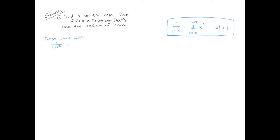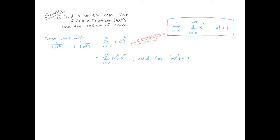First, we deal with 1 over 1 plus x^2. We can write the plus as minus minus, so it looks exactly like the box: 1 over 1 minus (−x^2). Using the box, everywhere we see x we replace it with negative x^2, giving us the series of (−x^2)^k. After simplifying, we replace every x in the interval condition with negative x^2. The series is valid as long as |−x^2| < 1. Since the absolute value removes the minus sign, taking the square root gives |x| < 1, so the radius is still 1.